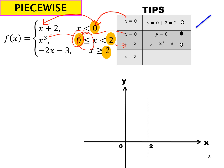When x equals 2, from the cubic function you get y equals 8, which is an open circle. For the last part, the linear function negative 2x minus 3: when x equals 2, you get y equals negative 7. This is a linear function with a negative gradient.